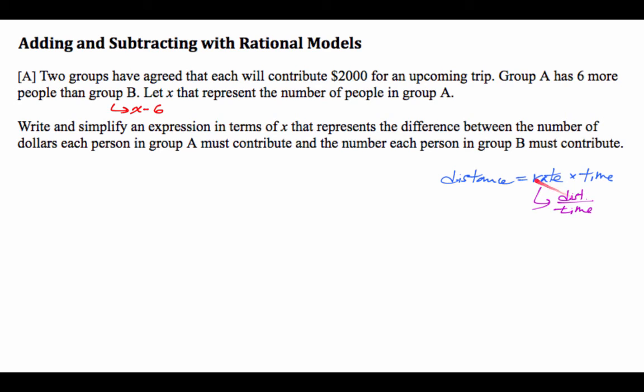Distance equals rate times time. So when you solve for the rate, you get distance divided by time. The similar case to this is that the total dollar amount equals the individual rate per person times the quantity of people.